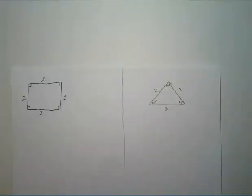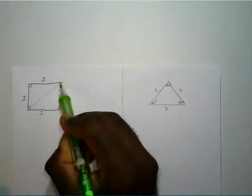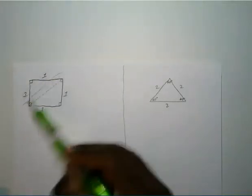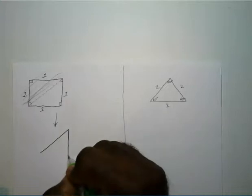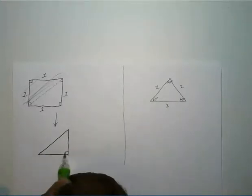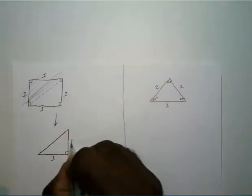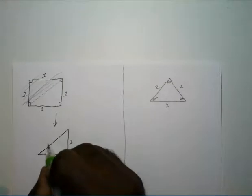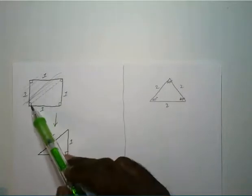For the square, we cut it in half diagonally and use only the bottom triangle. We know one side is one and the other side is one. Using the Pythagorean theorem — a squared plus b squared equals c squared — the hypotenuse ends up being square root of two. Since the 90-degree corner was cut in half, the two resulting angles are both 45 degrees.